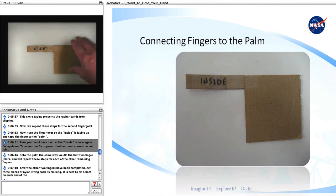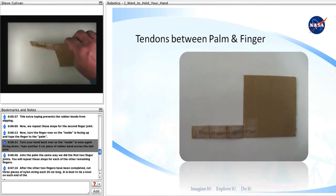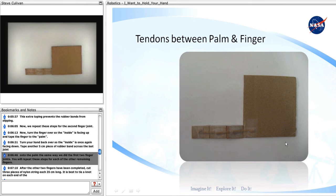Turn your hand back over so the inside is facing down. Tape another 5 centimeter piece of rubber band across the last joint onto the palm, the same way we did the first two finger joints.